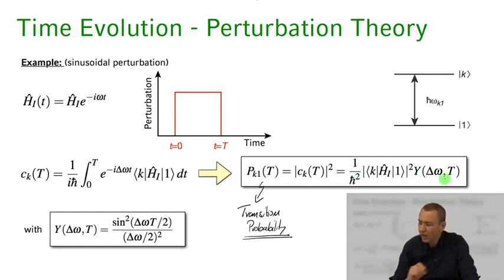And this function Y of delta omega of the detuning and our pulse length T. And we see actually in the case that we have here if you do the calculation you'll find that this Y is basically the sine squared of delta omega divided by delta omega squared.